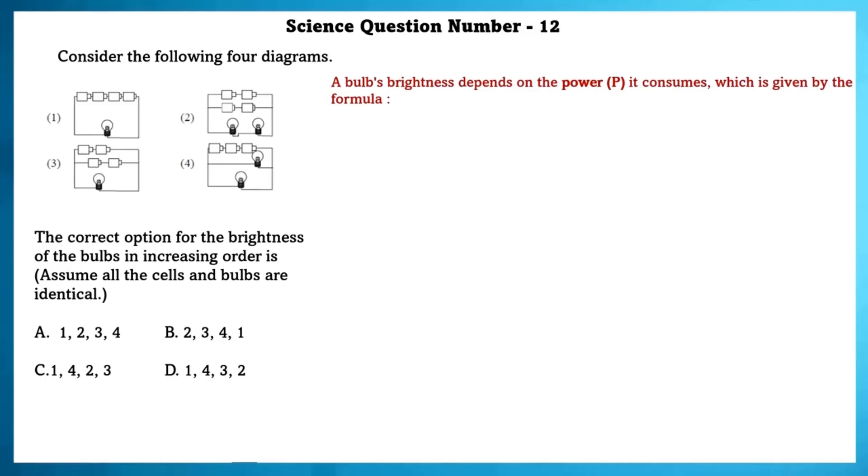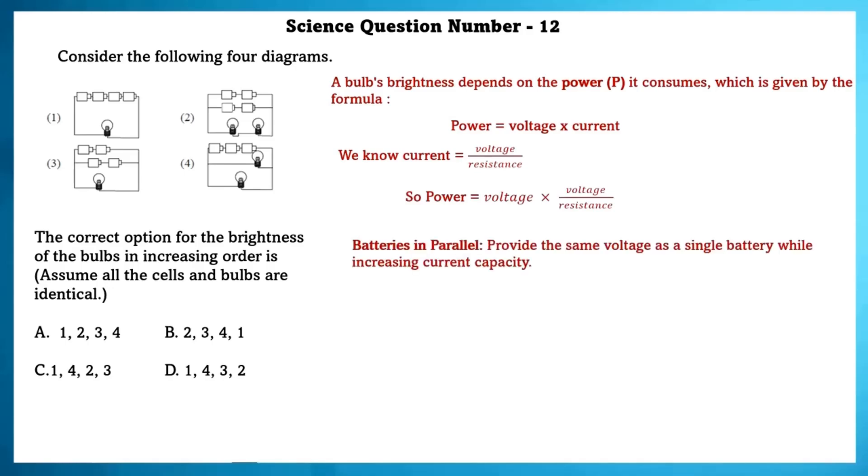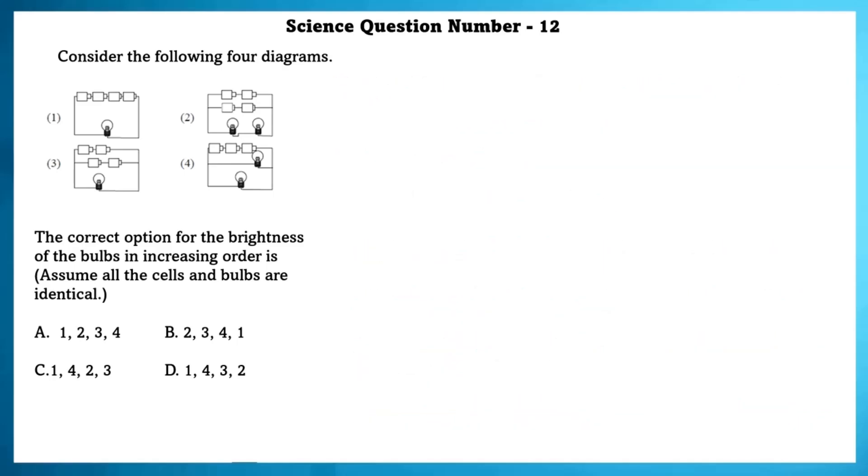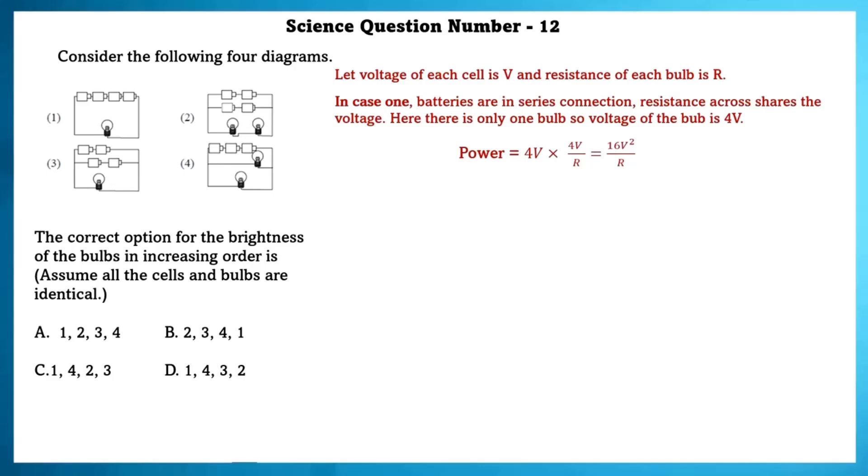Science question number 12. Consider the four diagrams. The correct option for the brightness of the bulbs in increasing order is: A bulb's brightness depends on the power P it consumes, which is given by the formula. Power is equal to voltage into current. We know current is equal to voltage by resistance. So, power is equal to voltage into voltage by resistance. Batteries in parallels provide the same voltage as a single battery while increasing current capacity. Batteries in series: The total voltage is the sum of individual voltages, while current capacity remains the same. Components like bulbs in series: The total voltage is the sum of individual voltage drops across each component, while the same current flows through all. Components like bulbs in parallel: The voltage across each component is the same, while the total current is the sum of individual currents flowing through each branch.